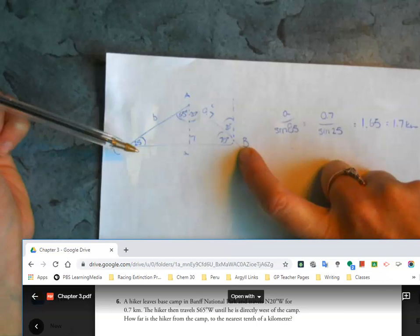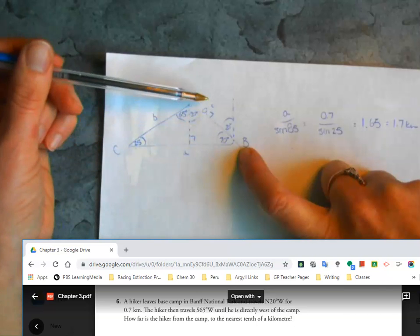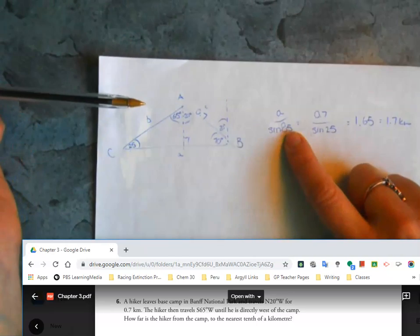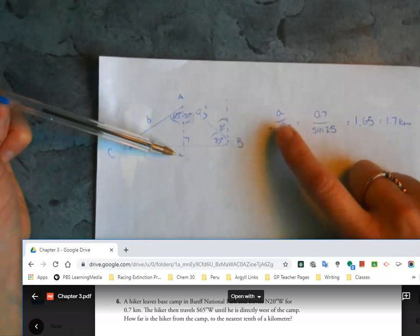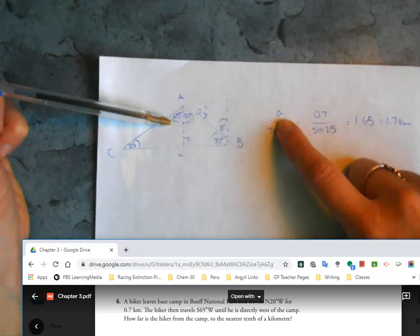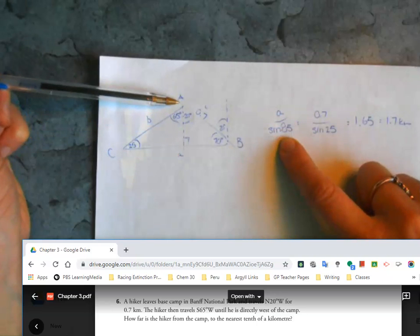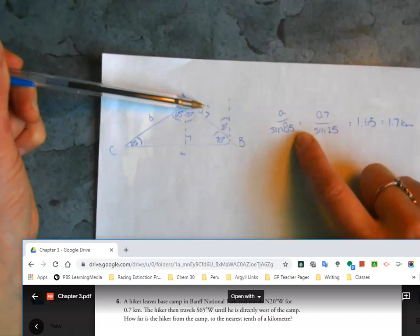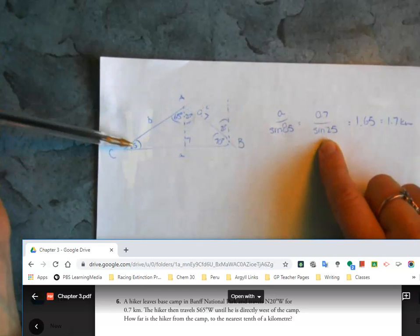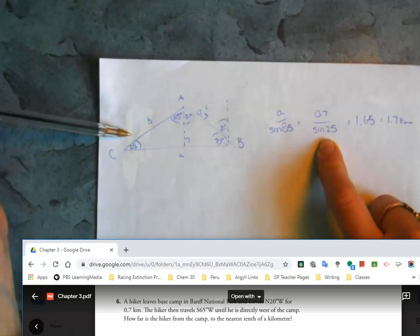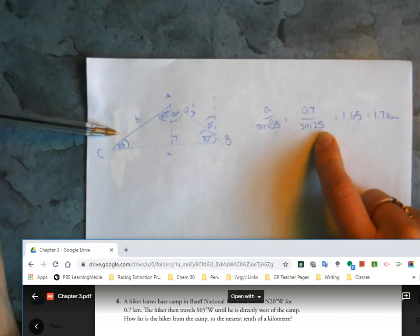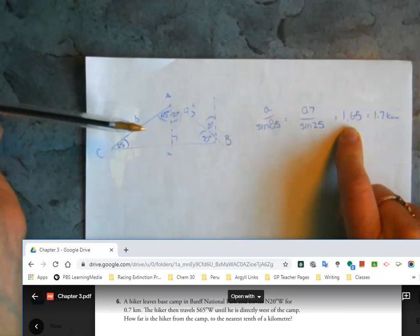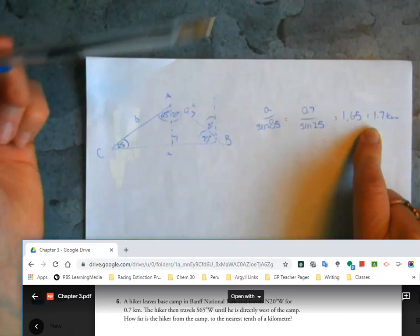Basically then I can apply my sine law. So I'm looking for side a which is opposite angle a here, which is sine of 85. And then what I have is side c which is 0.7 divided by the angle that's opposite it, which is sine 25. When I do sine 85 times by 0.7 divided by sine 25, I get 1.65 or rounded for sig digs 1.7 kilometers.